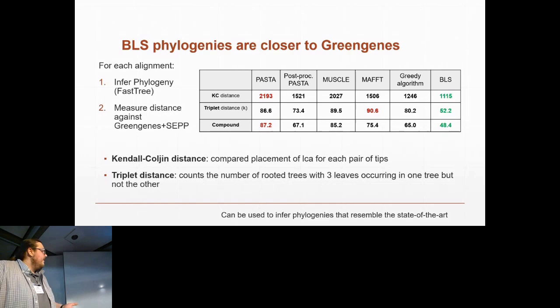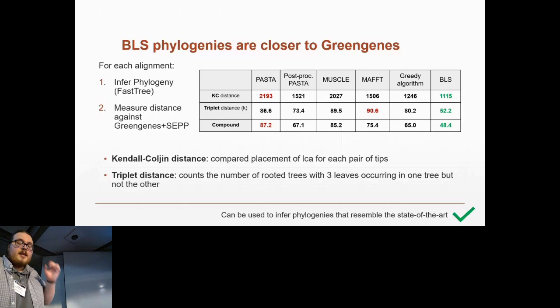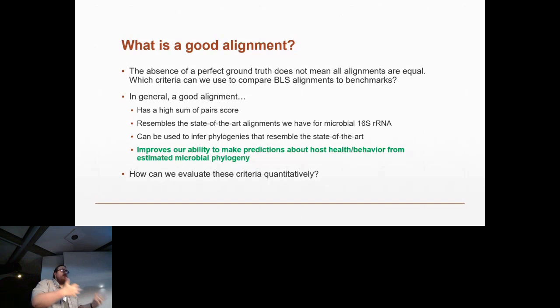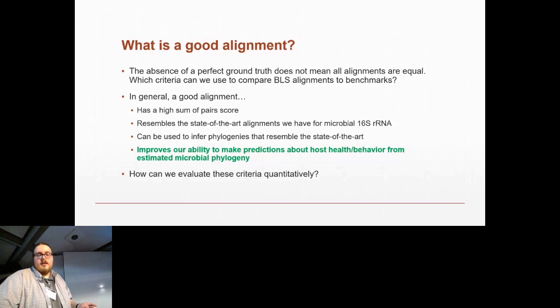We're quite confident that Borderline Science alignments can be used to infer phylogenies that resemble the state of the art. Finally, that leads us to our last point, which is the improvement to our ability to make predictions about information from the person who donated the sample, based on the composition and diversity of the gut microbiome sequences found in the stool sample.